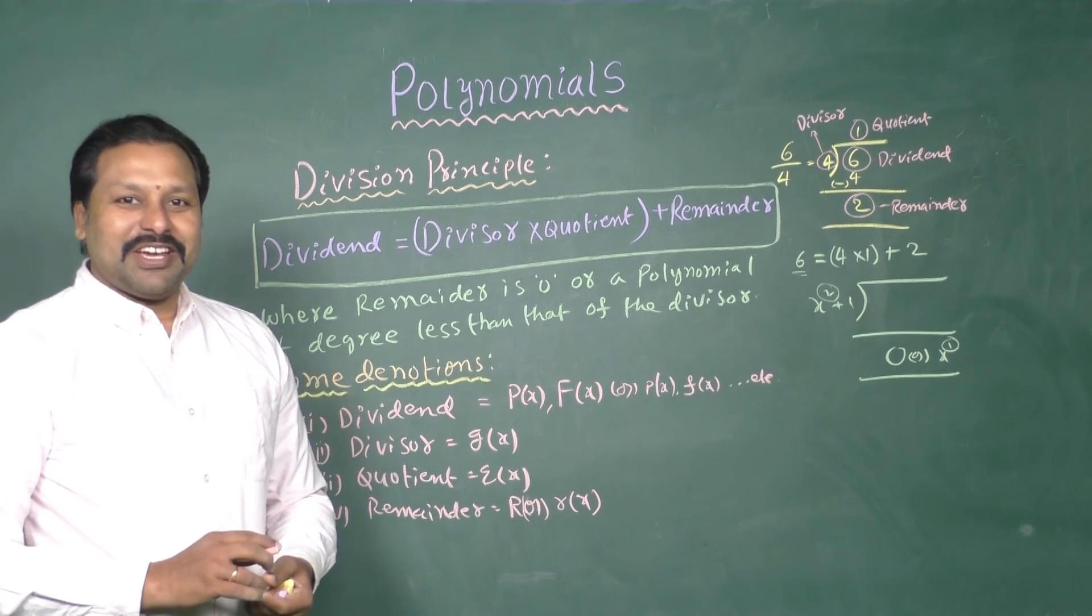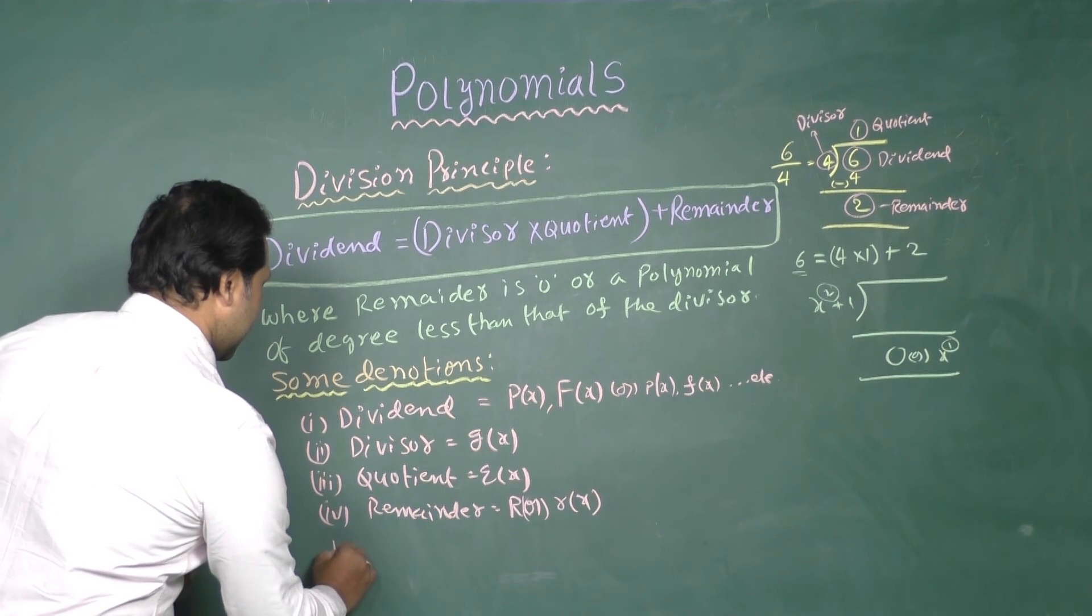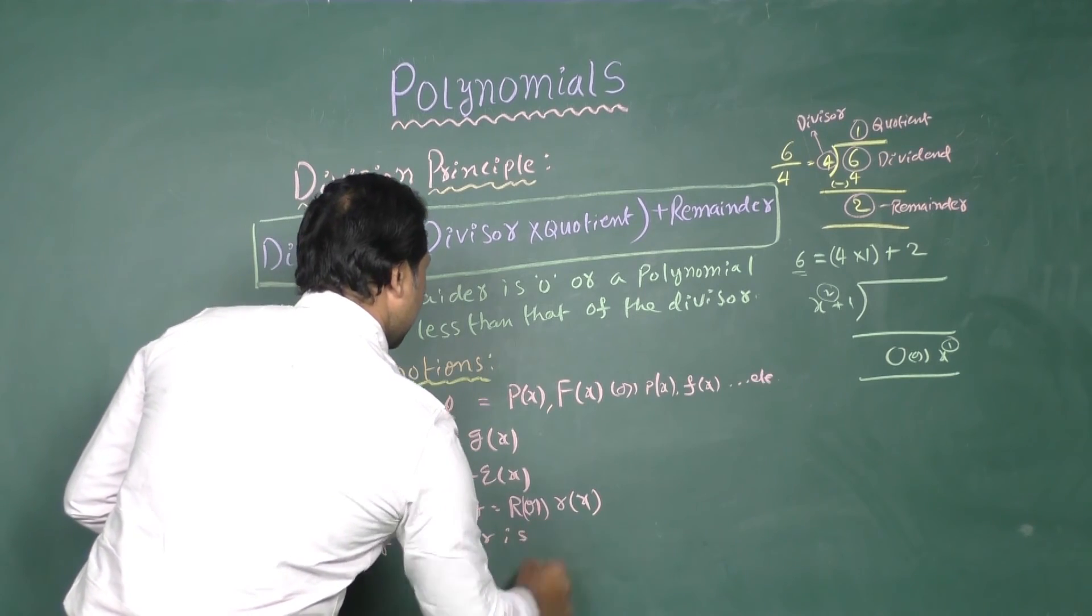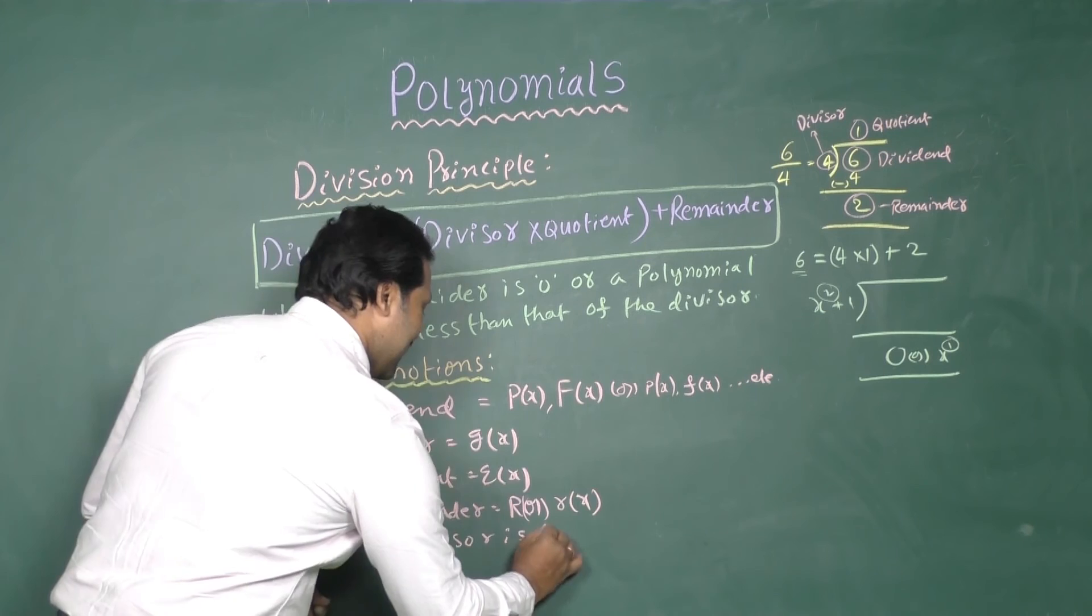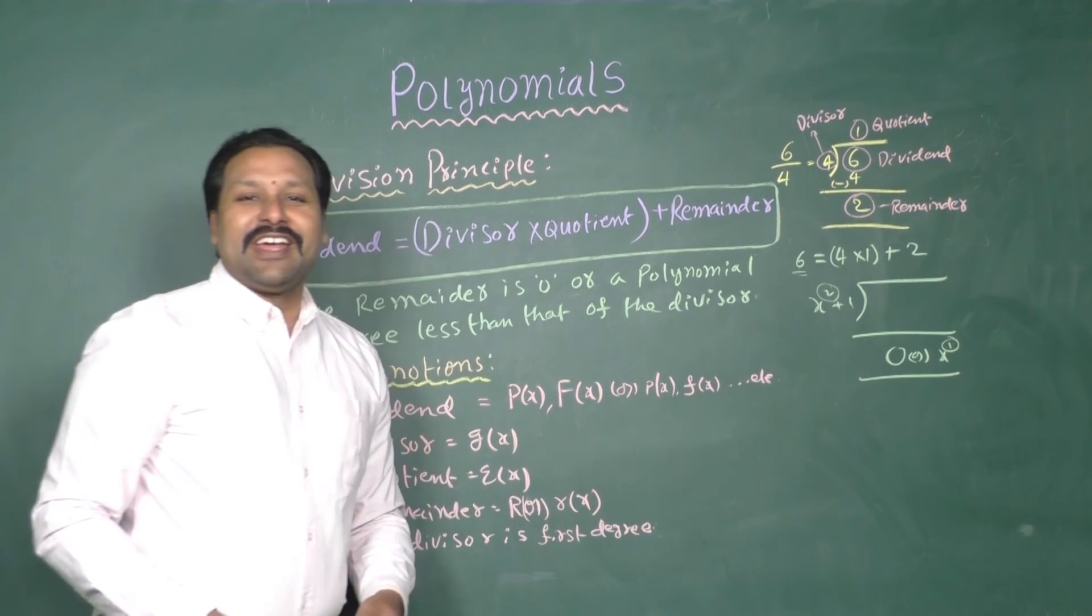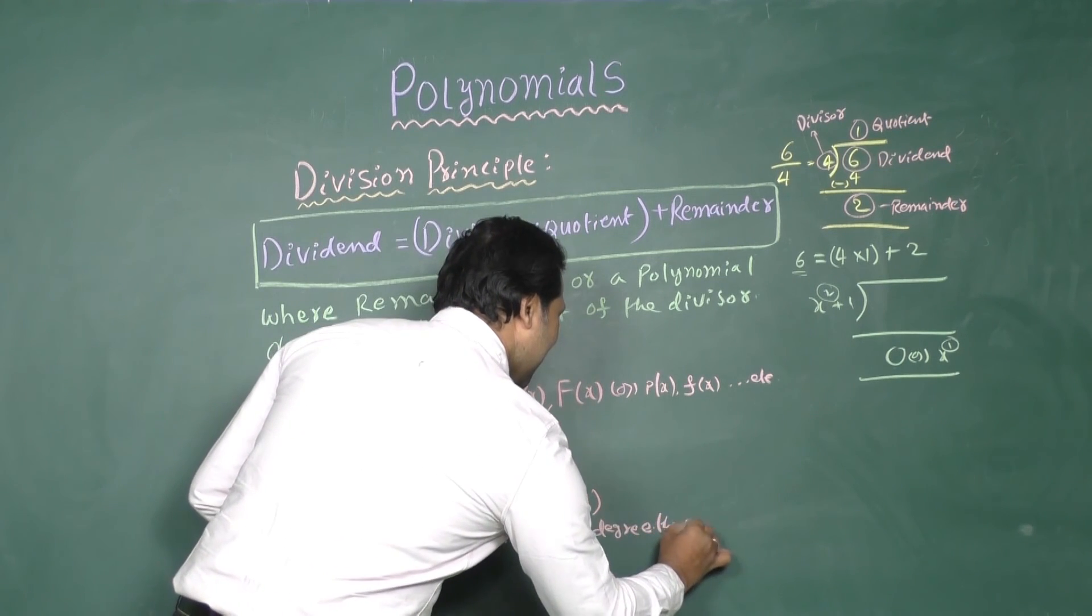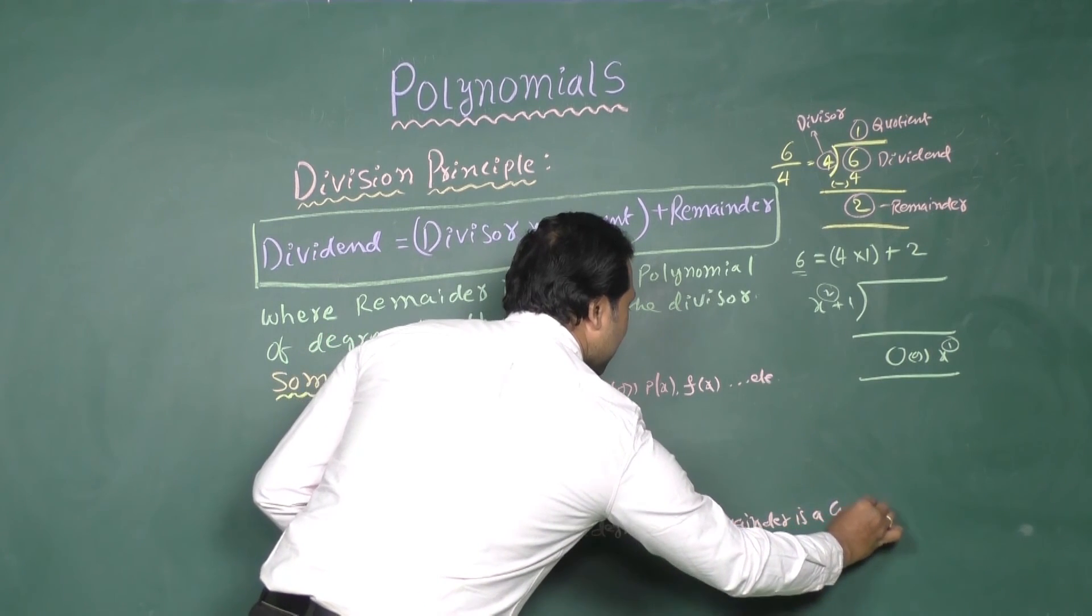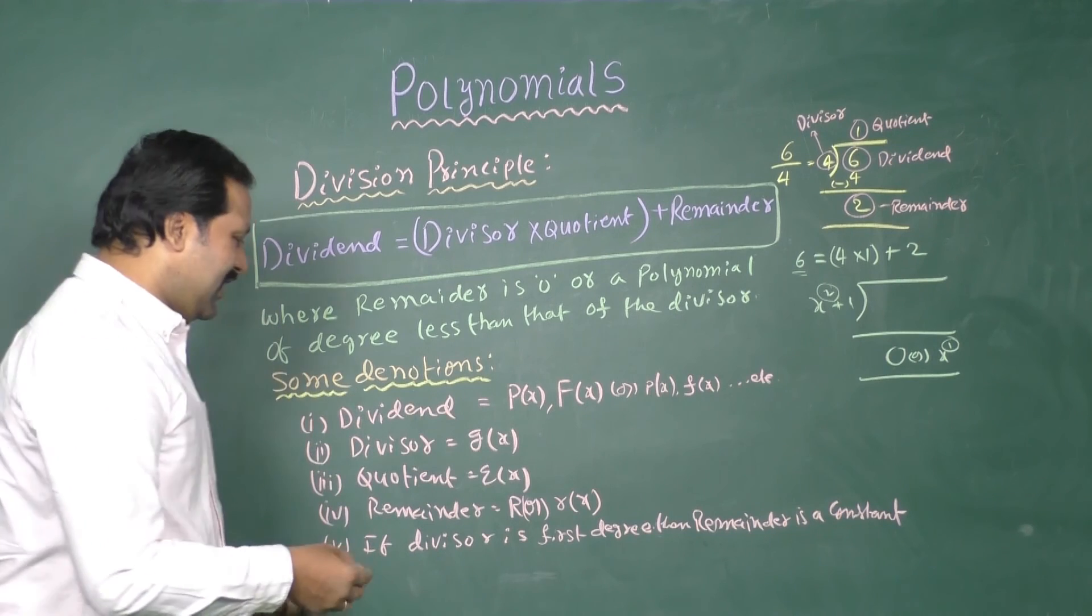If divisor is the first degree, then remainder is a constant. So, that divisors are maybe like this.